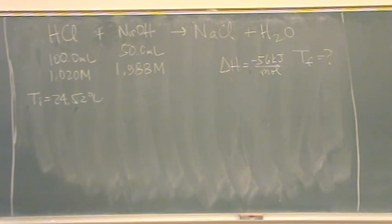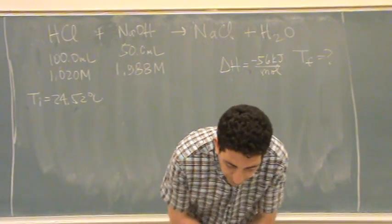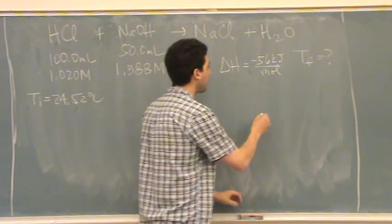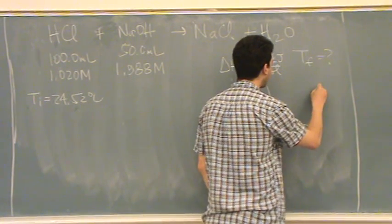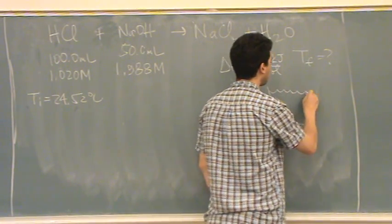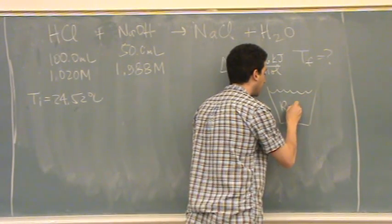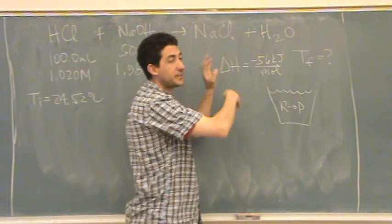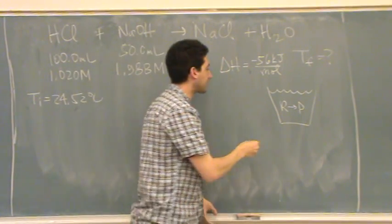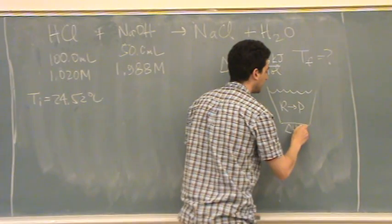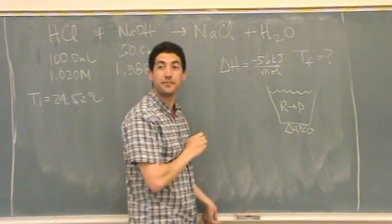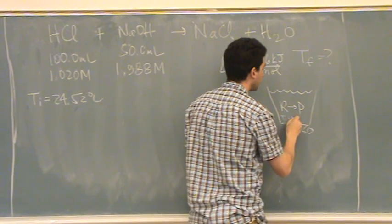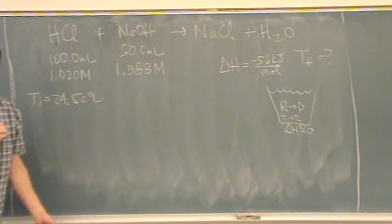They just say this happens in a styrofoam coffee cup calorimeter. So let's say we have a coffee cup, we have the liquid here. Reactants go to products. So these reactants go to these products inside there. It's exothermic, so delta H standard is a negative number. And there's a T initial goes to a T final.